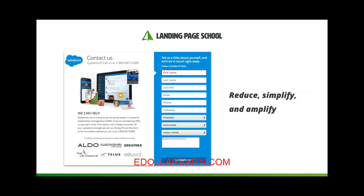Number three talks about reducing, simplifying, and amplifying your form elements. If you can reduce the number of form fields, go for it — forms with fewer fields usually convert better because they make the experience more frictionless for visitors. If you can simplify a complex form field into a simple one, do it. A good example is converting an open-ended question into a drop-down choice, which reduces the amount of typing a visitor needs to do. As for amplification, call attention to the most important parts of your form, such as the form header, subhead, and the button.